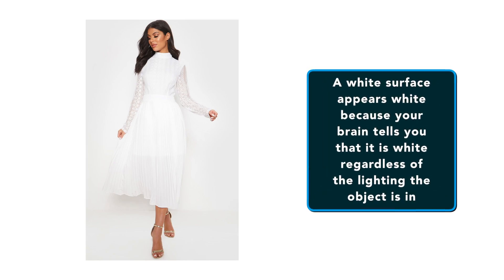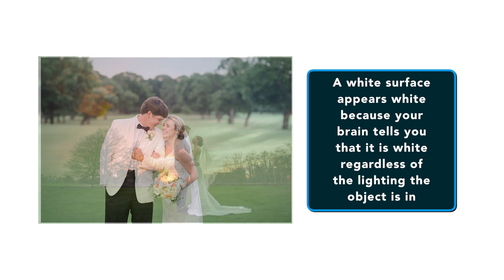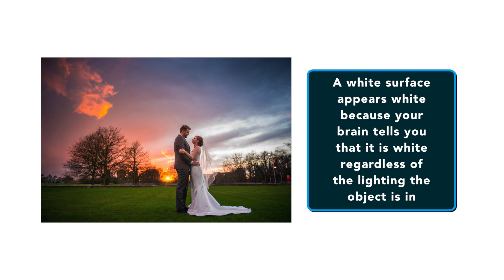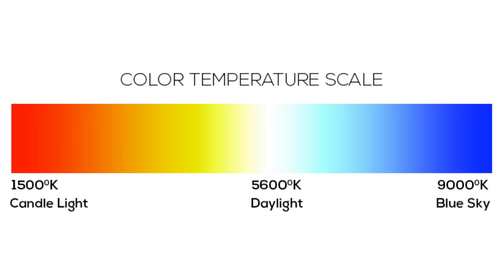A white surface appears white because your brain tells you that it is white. However, it may actually be reflecting the blue light of an overcast day or the deep orange of the Sun just before it disappears below the horizon. The reason that we see it as white is what's known as color temperature. The technical definition of color temperature is full of terms like black body radiator and chromacity space — in short, it's very confusing, very boring, and above all leaves you feeling even more baffled than before since these terms don't mean anything to a beginner.